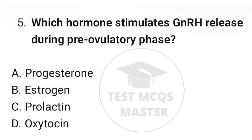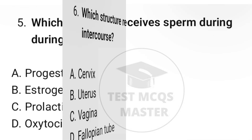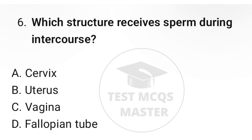Question number five: which hormone stimulates GnRH release during the pre-ovulatory phase? The correct option is B, estrogen. Question number six: which structure receives sperm during intercourse? The correct option is C, vagina.